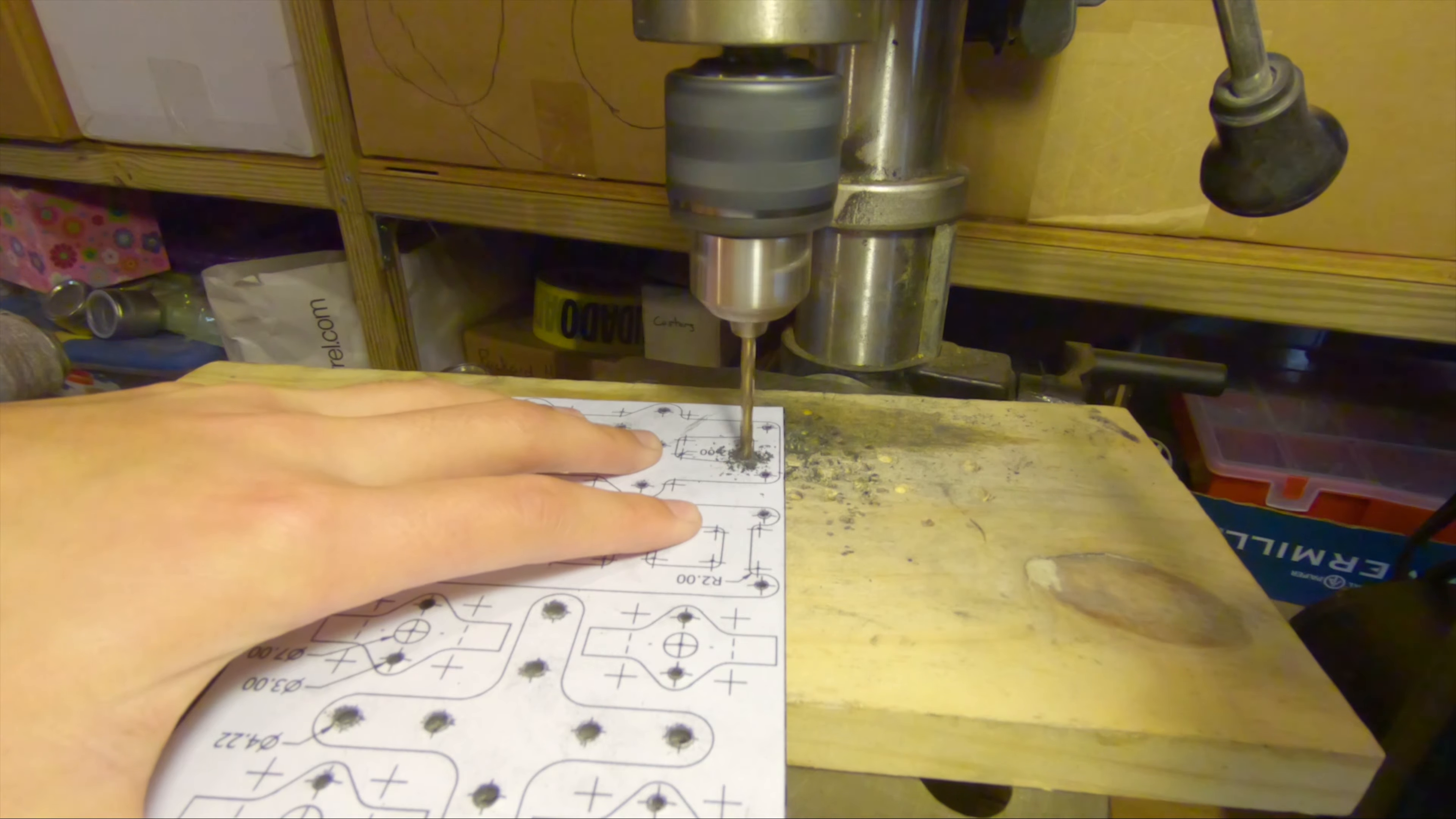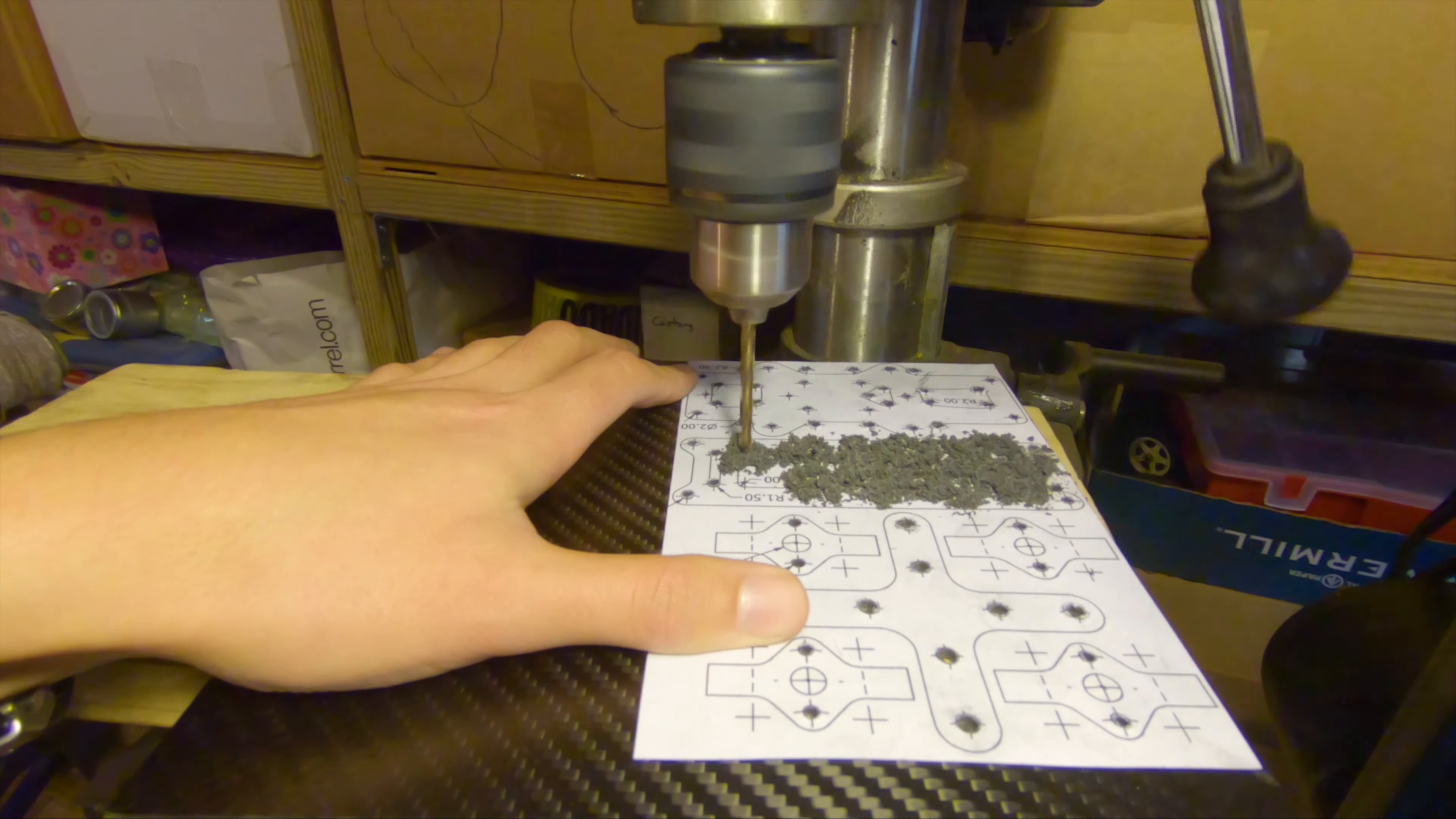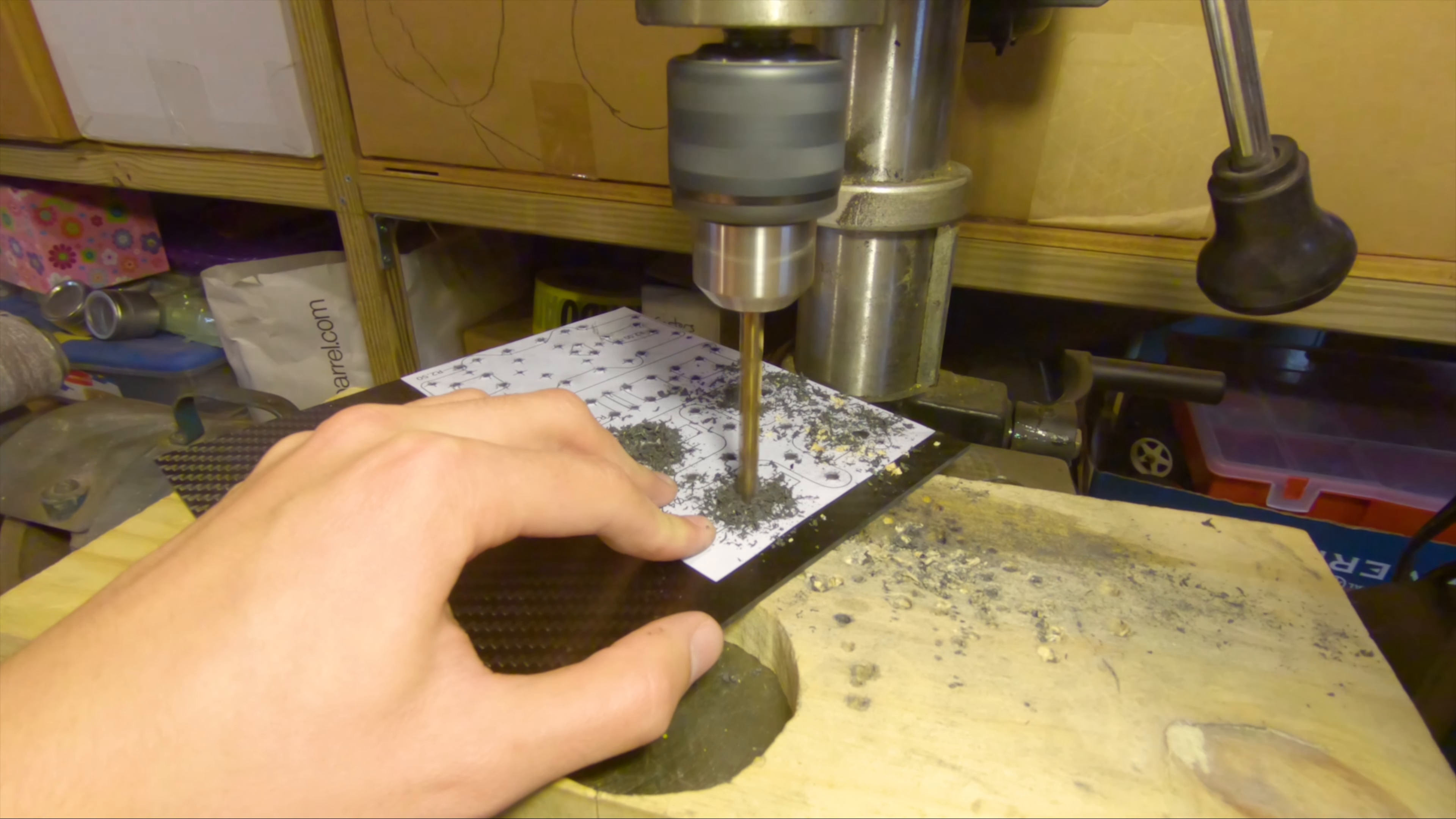Then I use a four millimeter drill bit for all of the rounds on the cutouts and the rounds on the outsides of the flat carbon plate parts. Then I use a big drill bit for the center holes of the motor mounts.